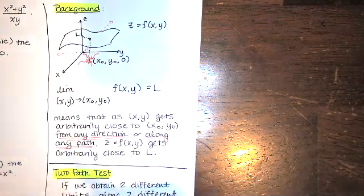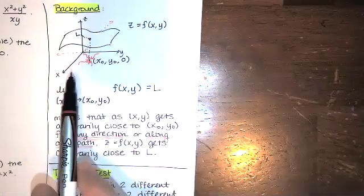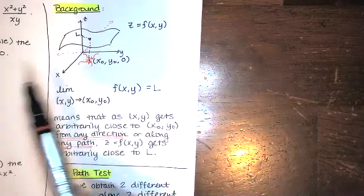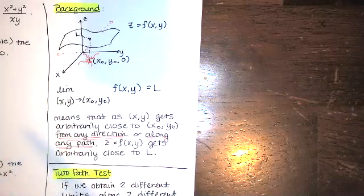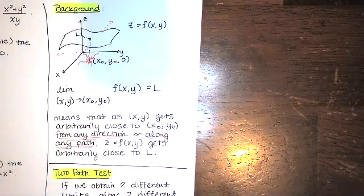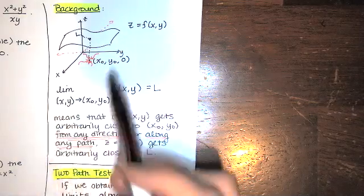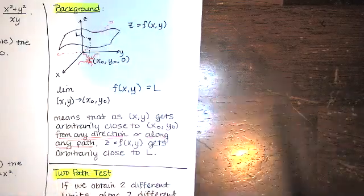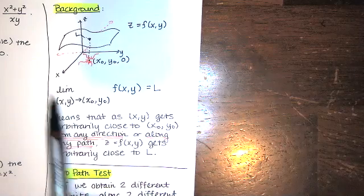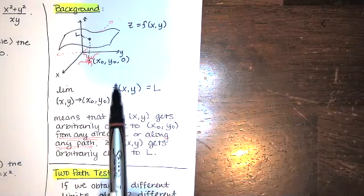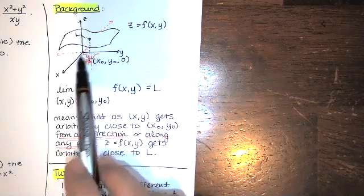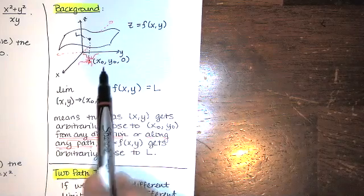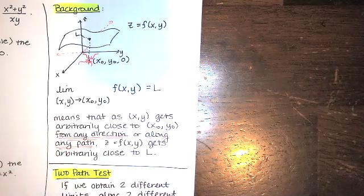This is different from Calculus 1, because in Calculus 1 you really only needed the limit from the left and the limit from the right to both exist and be the same thing, and then you would have a limit. This is harder because we've got infinitely many ways that we can approach the point (x₀, y₀) in the x, y plane.